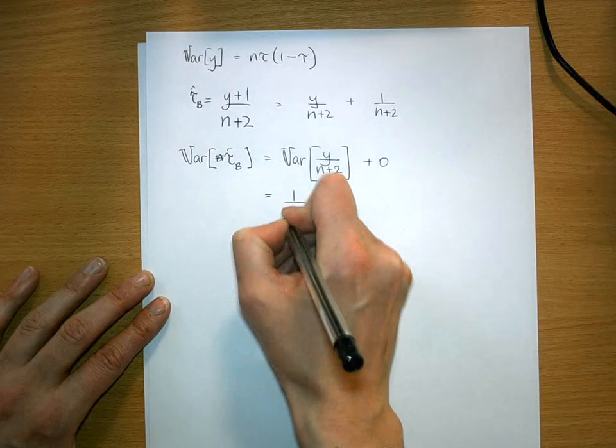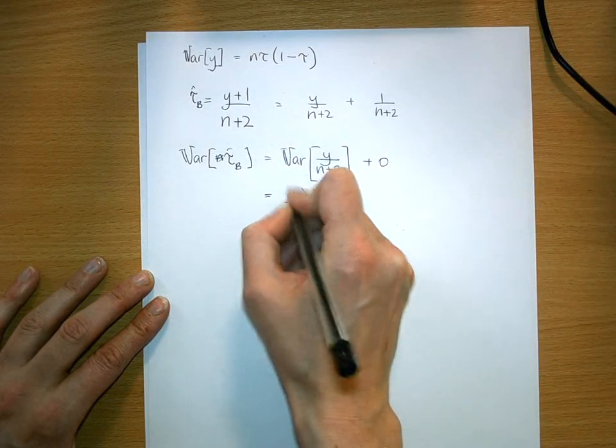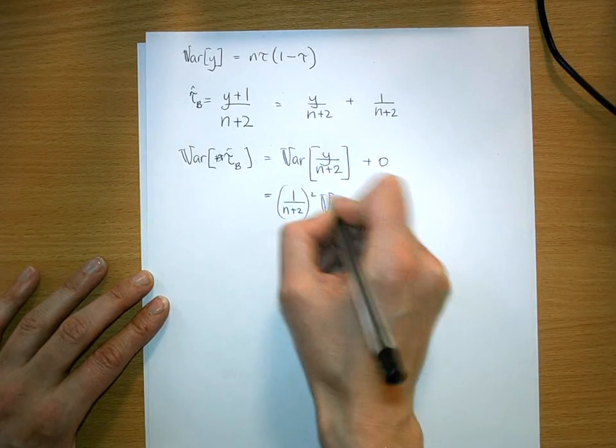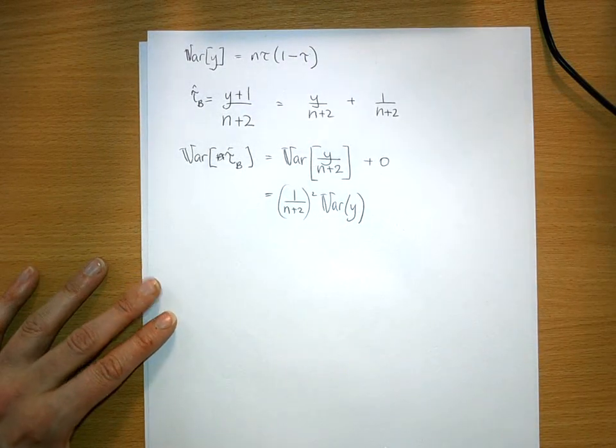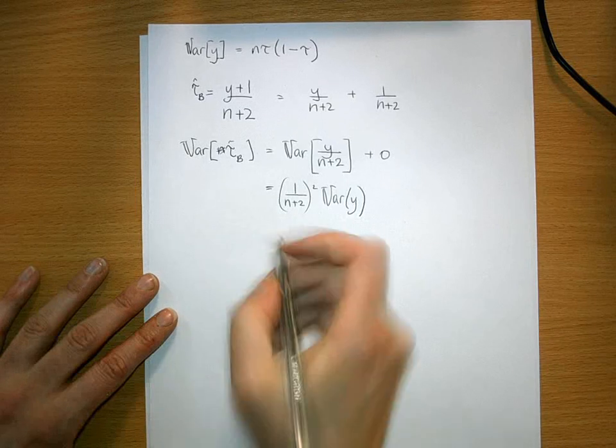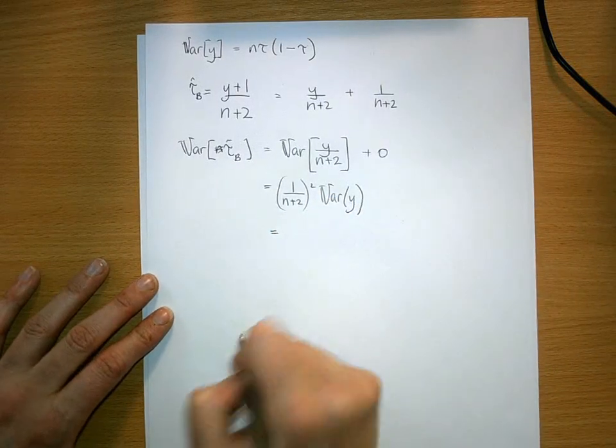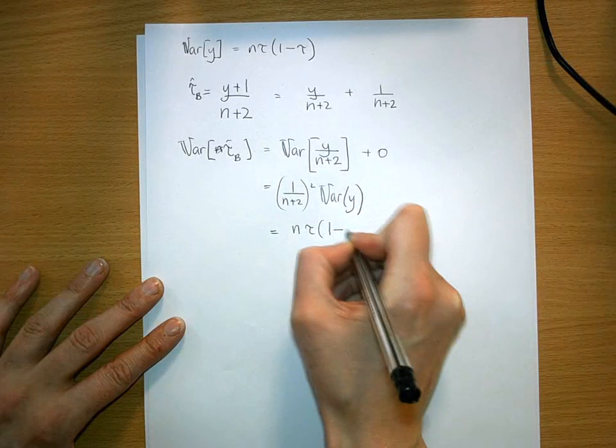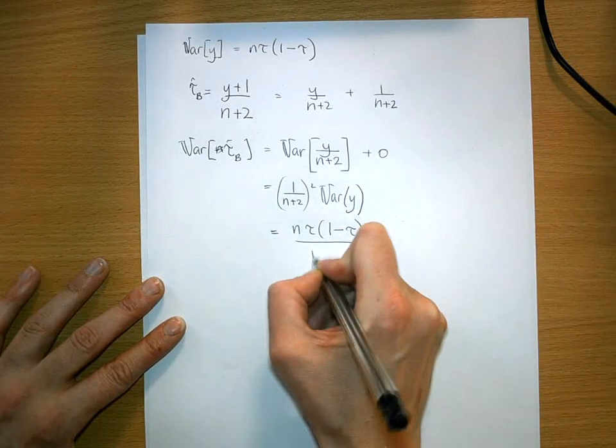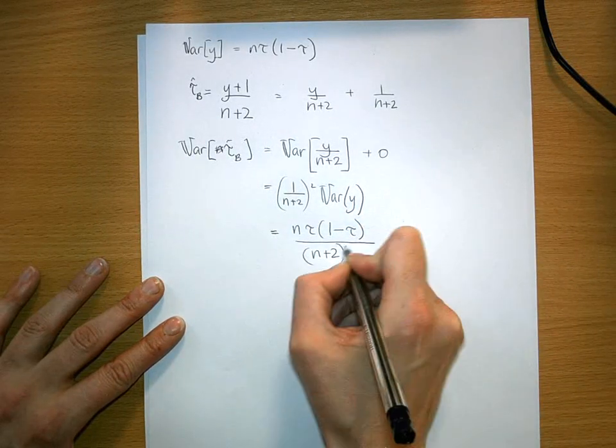That equals 1/(n+2)^2 times the variance of y. That's all first year stuff. Then you plug in the relevant bits, so you get n*tau*(1-tau)/(n+2)^2.